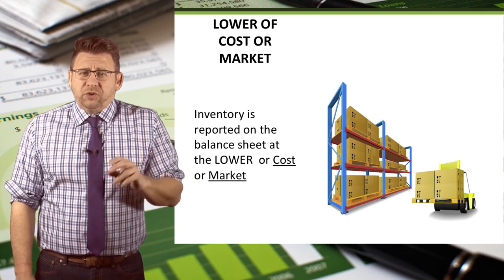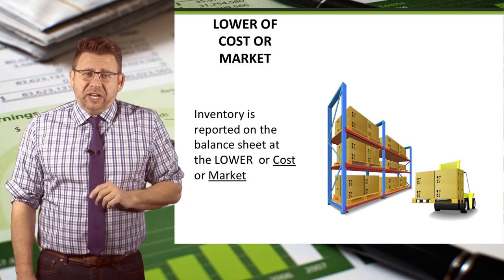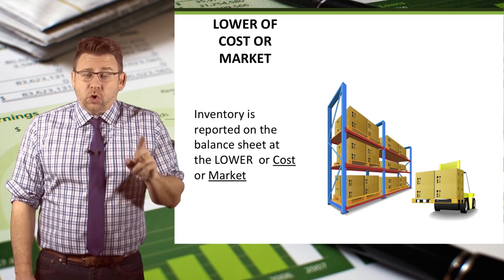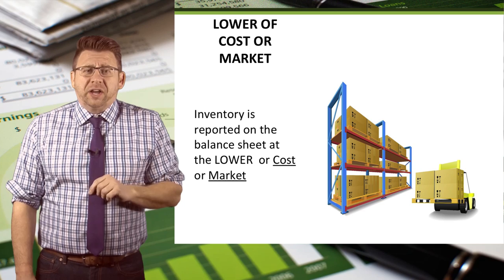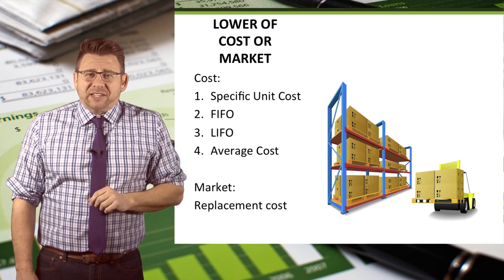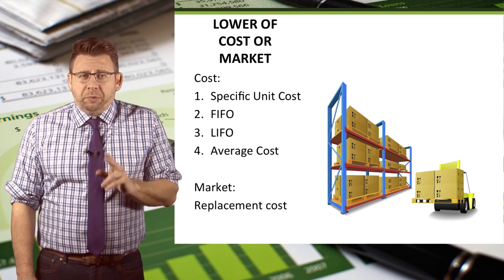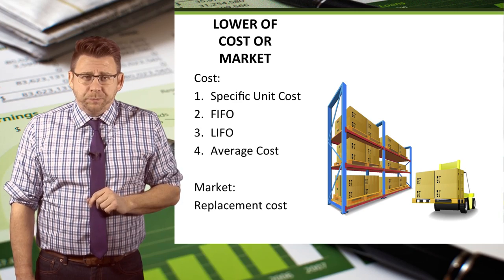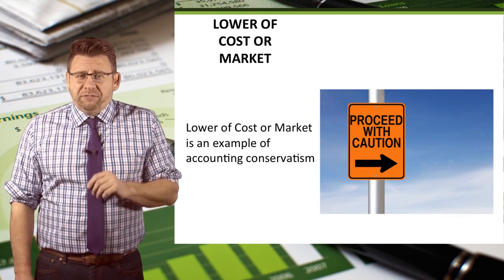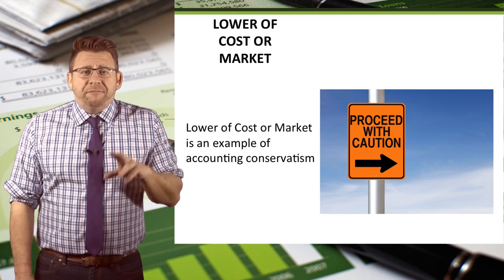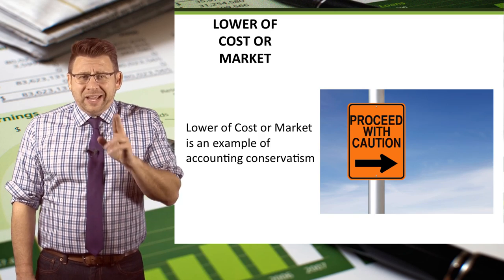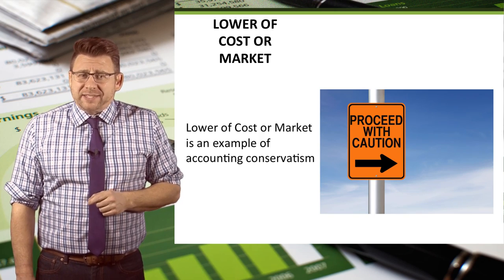When we report inventory on the balance sheet, however, we report it at the lower of its cost or its market value. Market value is defined as the current replacement cost of inventory. Reporting inventory at the lower of cost or market value follows the conservatism principle by not overstating the value of assets.